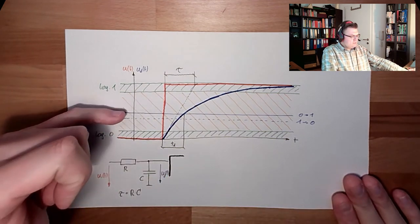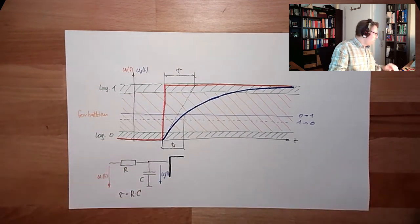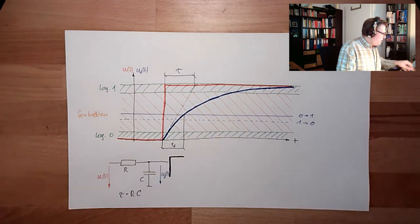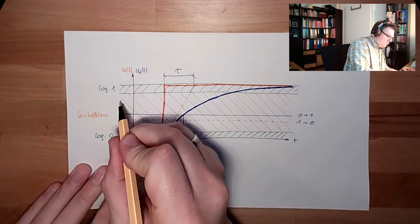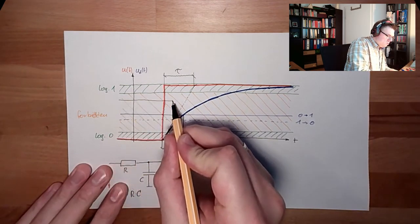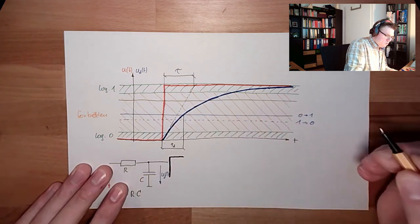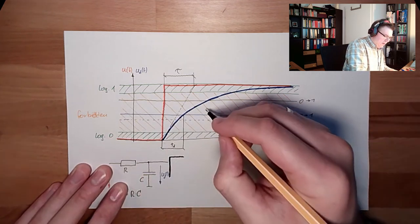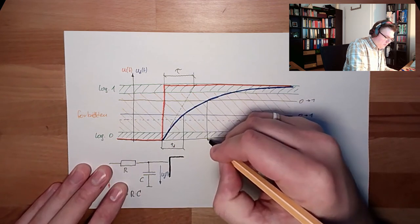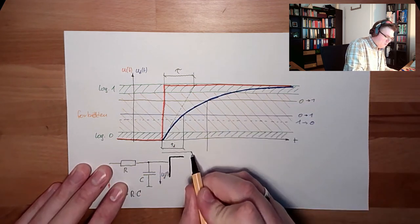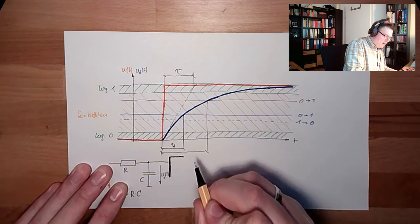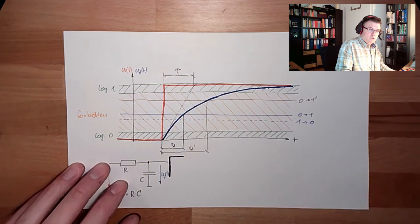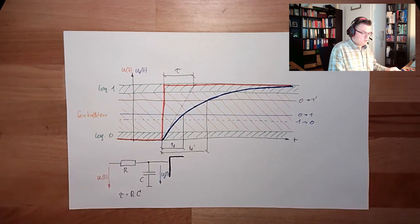However, since these levels are not guaranteed, they might be on a different chip. On a different chip, they might be here, let's say. So this is from zero to one. And suddenly, we have a totally different delay time. Just because I'm using a different chip. This is not good.